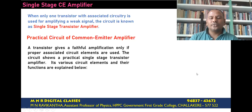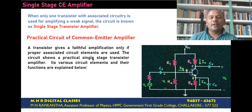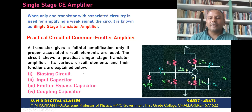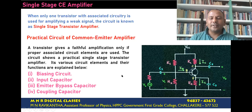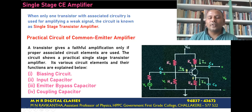The circuit shows the practical circuit elements used in the construction of a CE amplifier. These circuit elements consist of a biasing circuit, input capacitor, bypass capacitor, and coupling capacitor. R1 and R2 along with RE form the biasing circuit with stabilization. C1 forms the input capacitor, C3 forms the emitter bypass capacitor, and C2 forms the coupling capacitor.